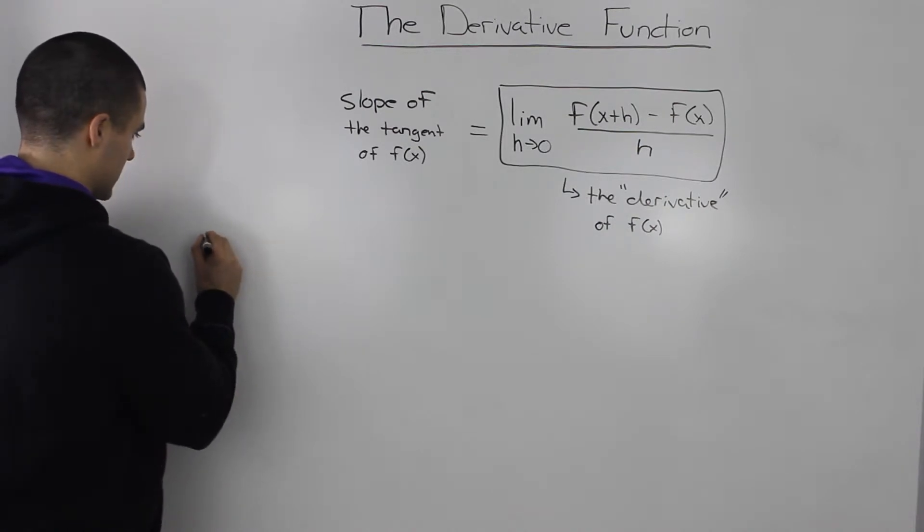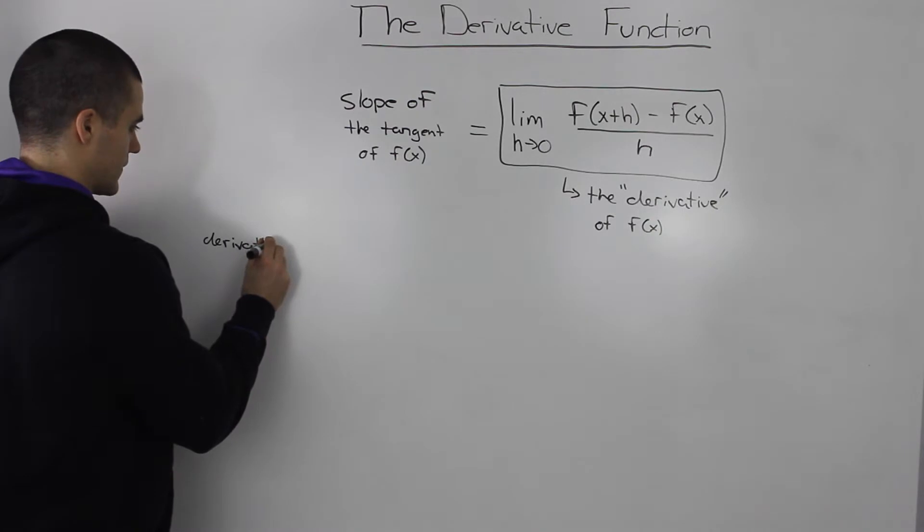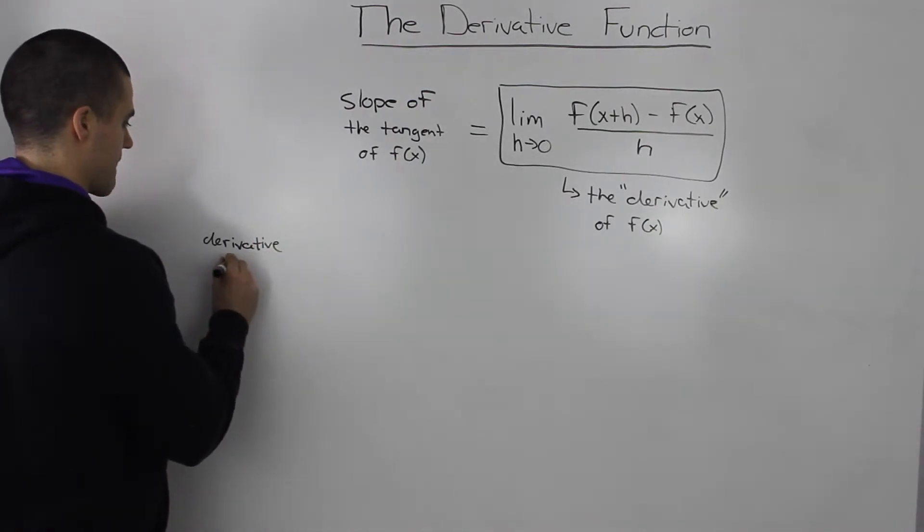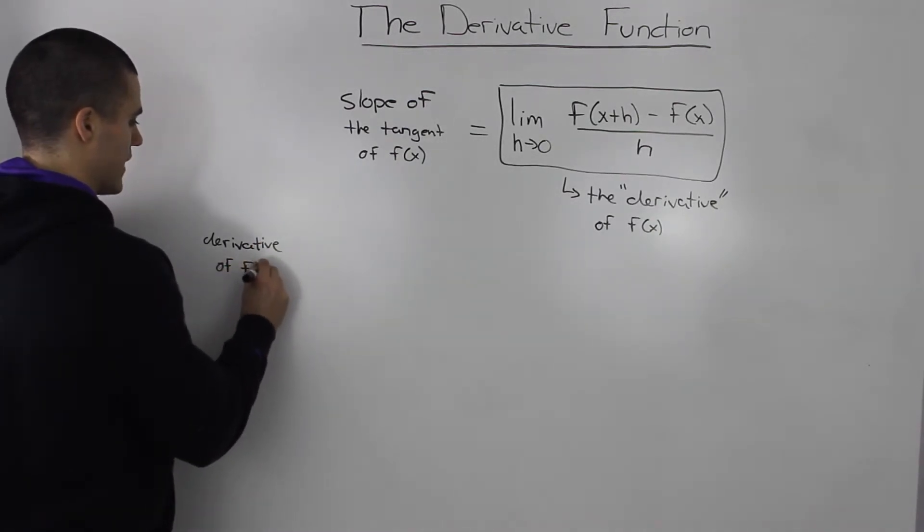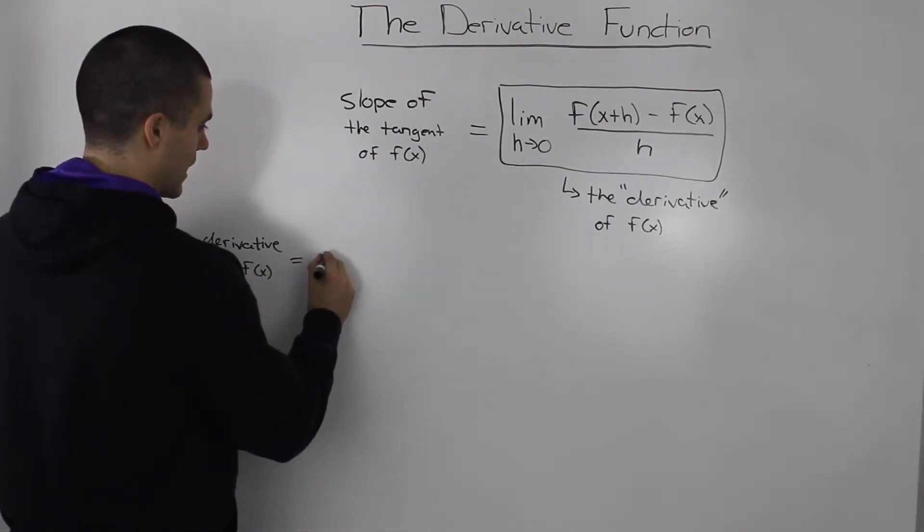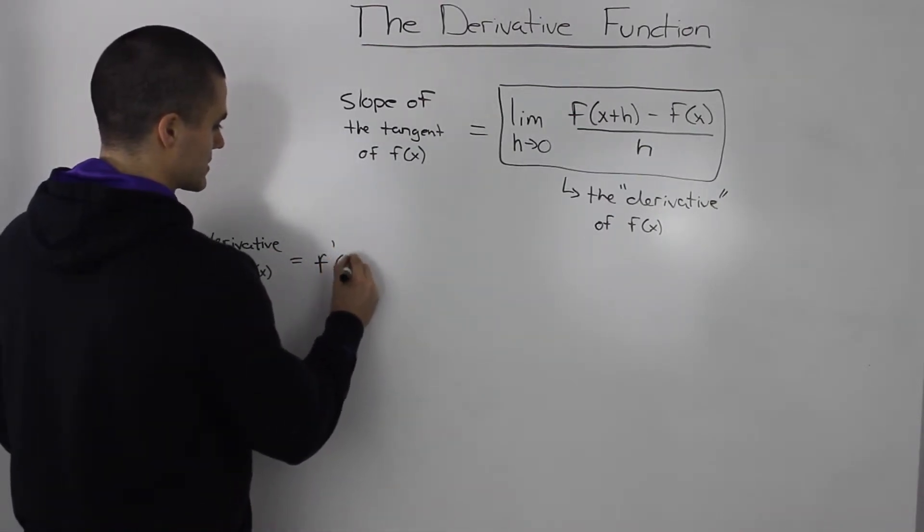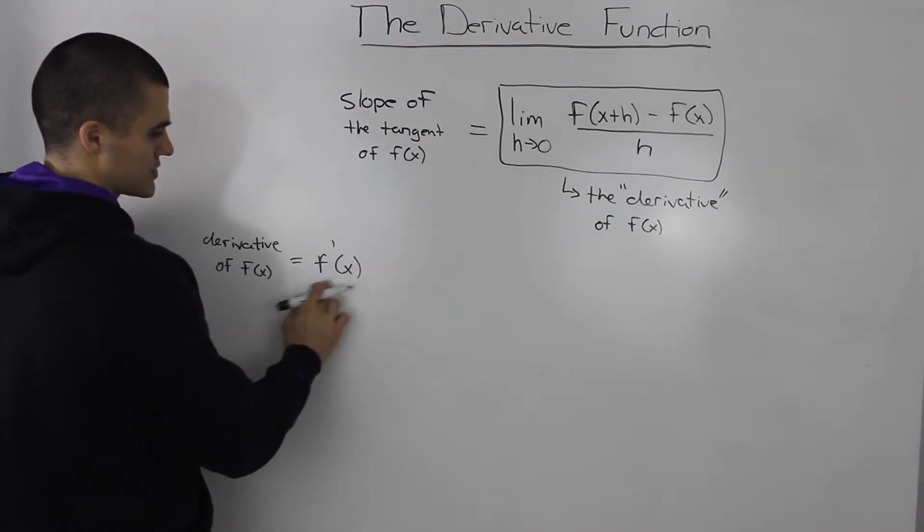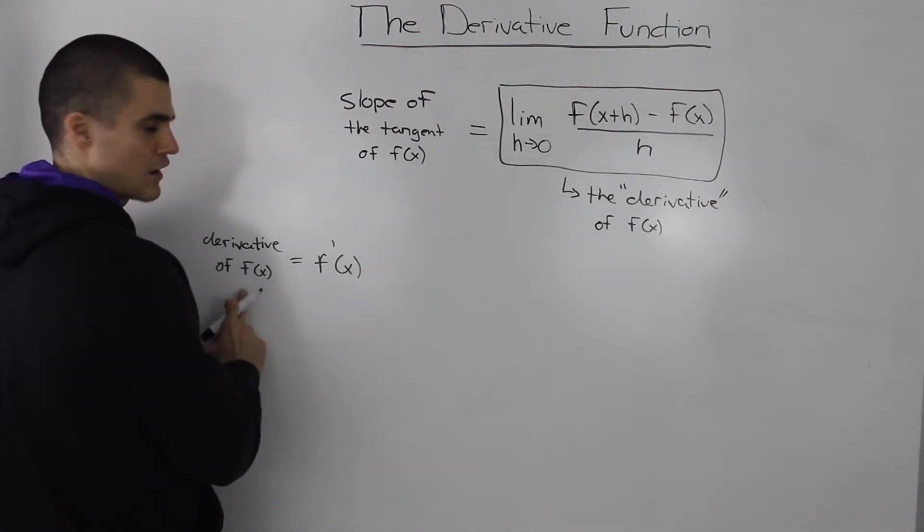So let's write a bunch of equivalencies here, so basically the derivative of f of x. You can also see this notated by f prime of x. So whenever you see this, this just means the derivative of f of x.